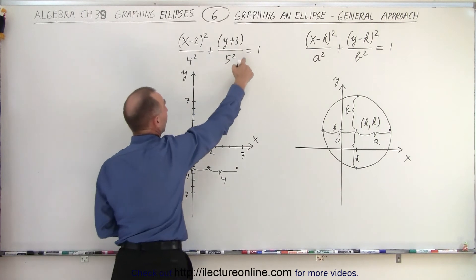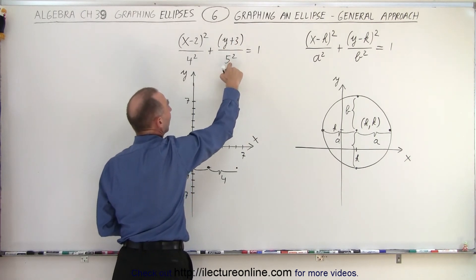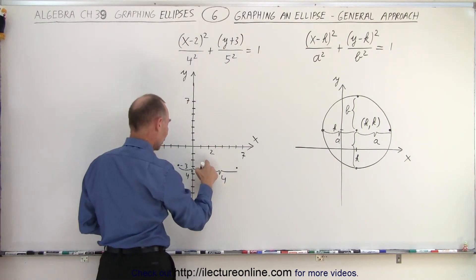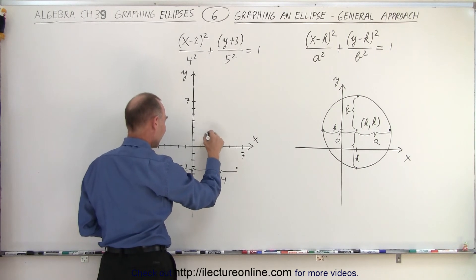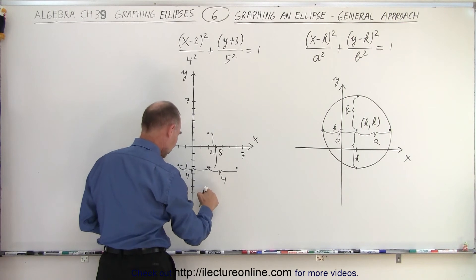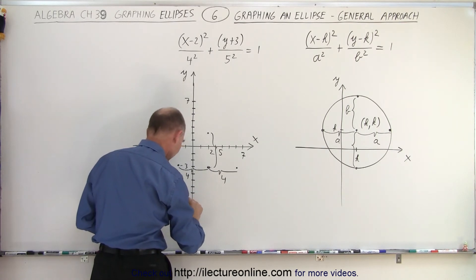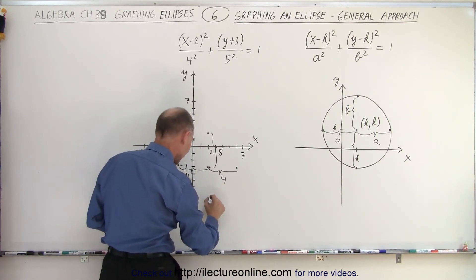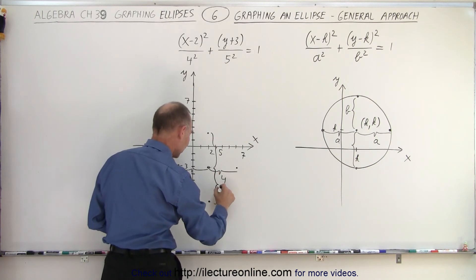And then we look at the term with the y in it. Notice we're going to go up and down five units. So one, two, three, four, five. So this distance here is five. And we're going to go down five units. One, two, three, four, five. I guess I need negative eight there, right there. And so this distance here is five units as well.